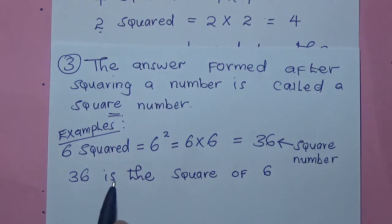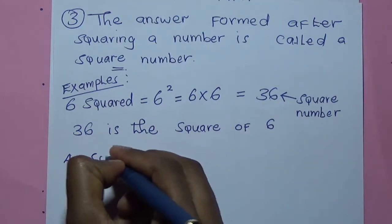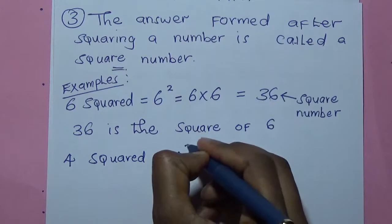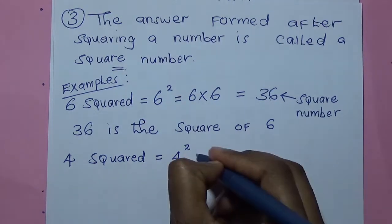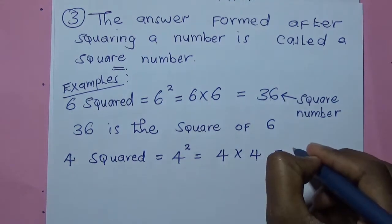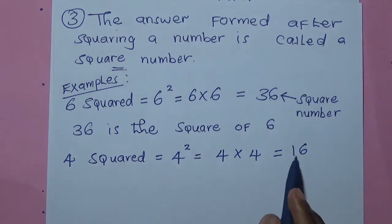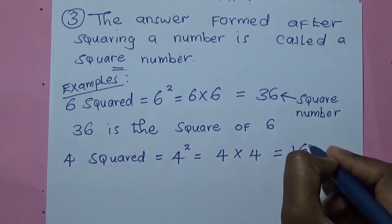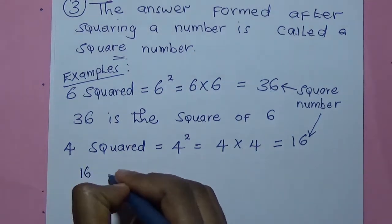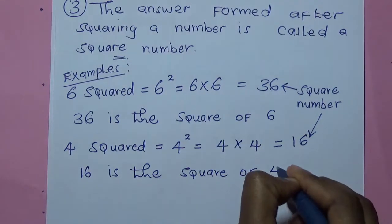36 is the square of 6. Now we look at 4. 4 squared can be written as 4 with a small 2 on top, which means you multiply 4 by itself. 4 times 4 gives you 16. So 4 squared gives you 16, and 16 is the answer — the square number. We can write that 16 is the square of 4.